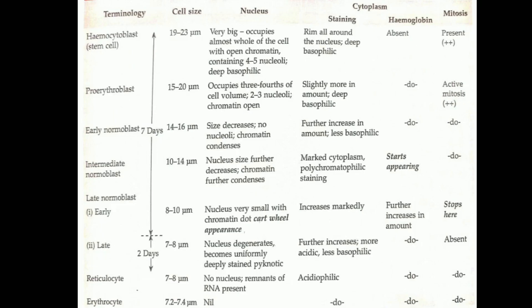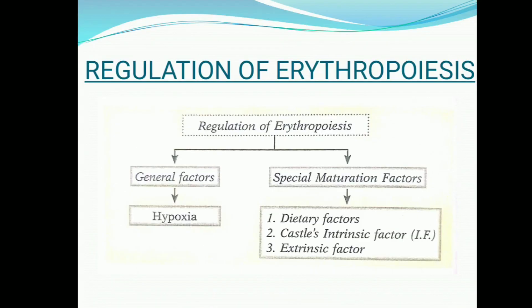The size of the nucleus gradually decreases across stages. In the proerythroblast, the nucleus is three-quarters the size of the cell, whereas the erythrocyte is non-nucleated. Regarding hemoglobin, it is initially absent and starts appearing after the intermediate normoblast stage, with the amount increasing progressively. Mitosis is present up to the late normoblast stage and is absent after that.